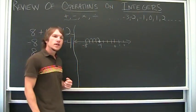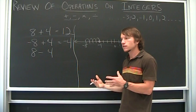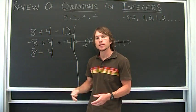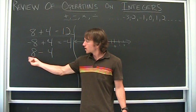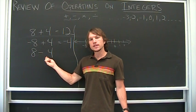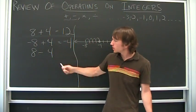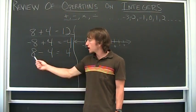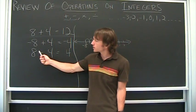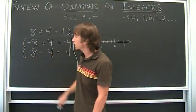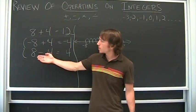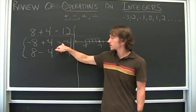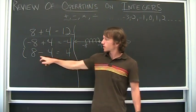Next example: eight minus four, where the eight's positive and the four is negative. Eight minus four is the same thing as eight plus negative four — they're the same thing. What I'm interested in is the signs: one positive and one negative. So I do the same thing as the previous example — I subtract and keep the sign of the bigger number. In this case I keep the sign of the eight, so eight minus four is positive four. Note the difference — this is where a lot of confusion comes in.